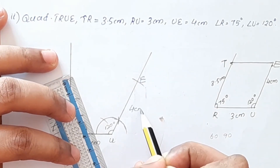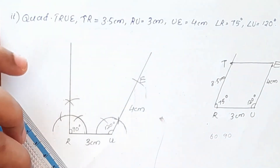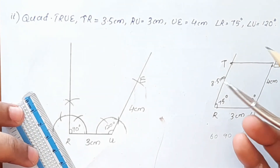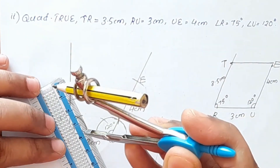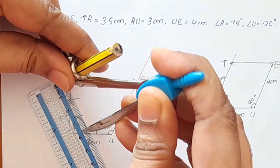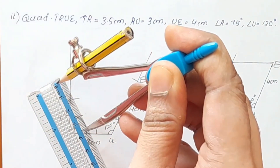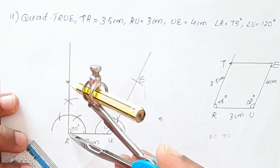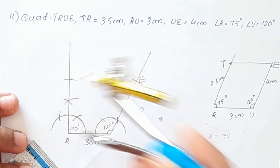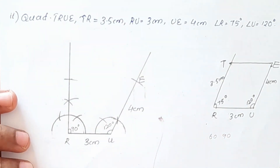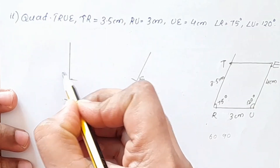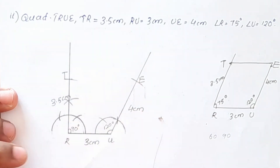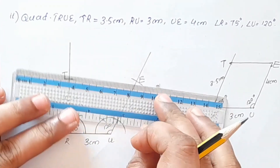That is 3.5 cm. Now we have 3.5 cm measured. We will mark it at the center. This point is T. This is 3.5 cm. Now TM and EM also join.